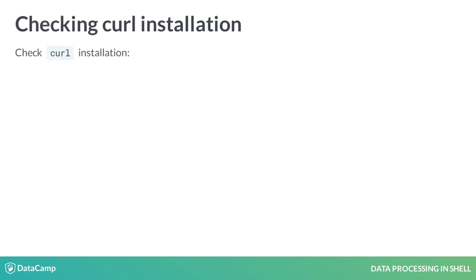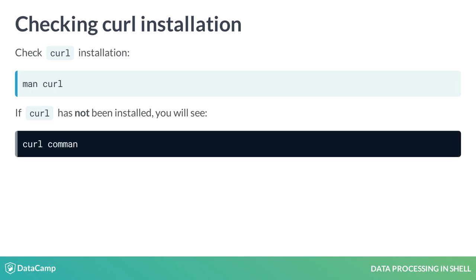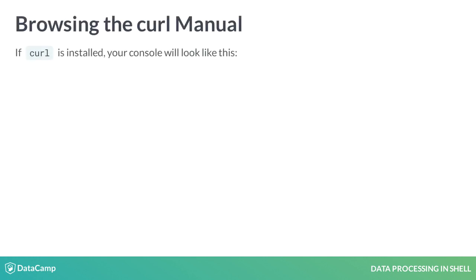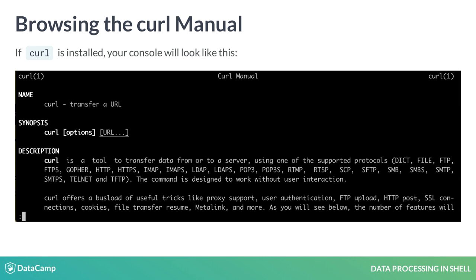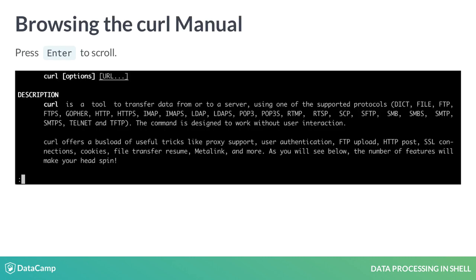To check if curl has been properly installed, type the following in the command line: man curl. If curl has not been installed, you will see 'curl command not found.' To install curl, follow this link. If curl is installed, your console will look like this. Keep pressing enter to scroll through the curl manual. To exit and return to your console, press Q.